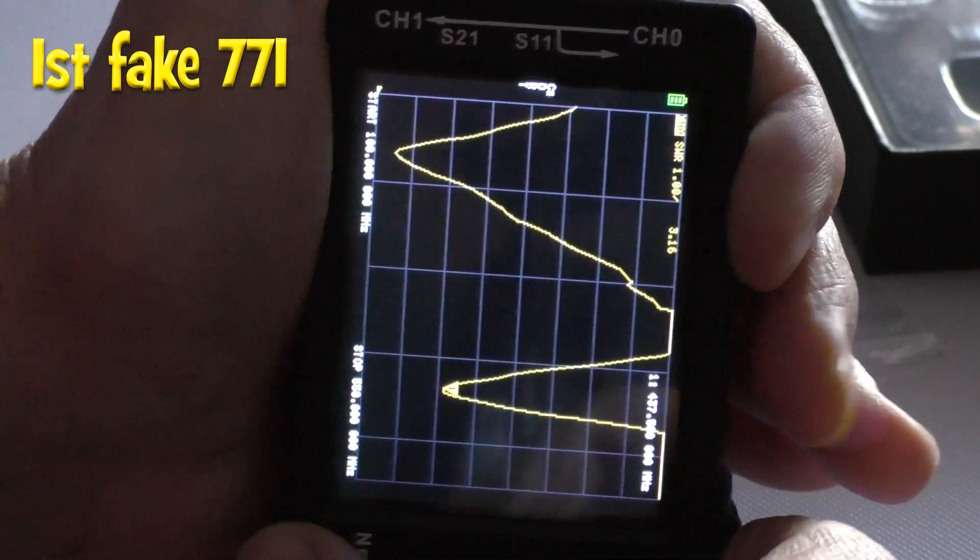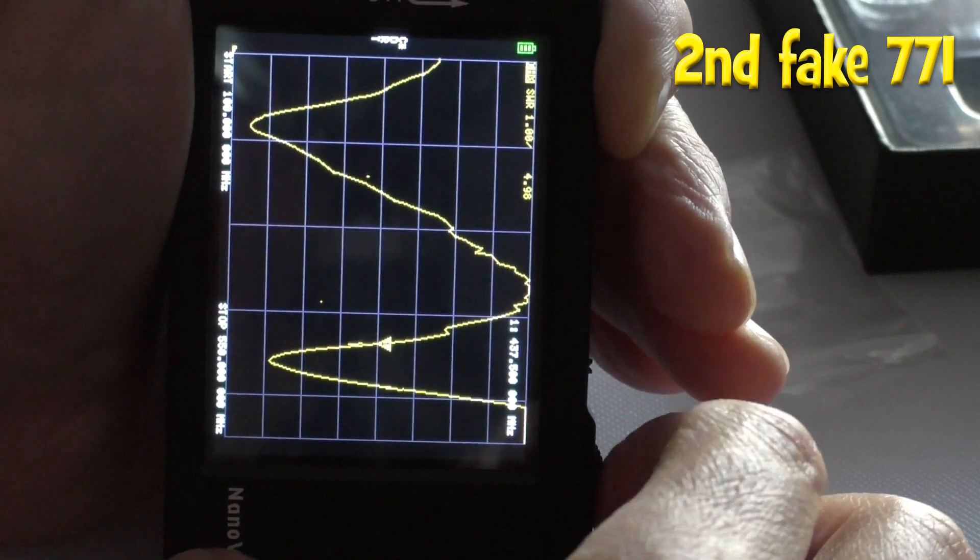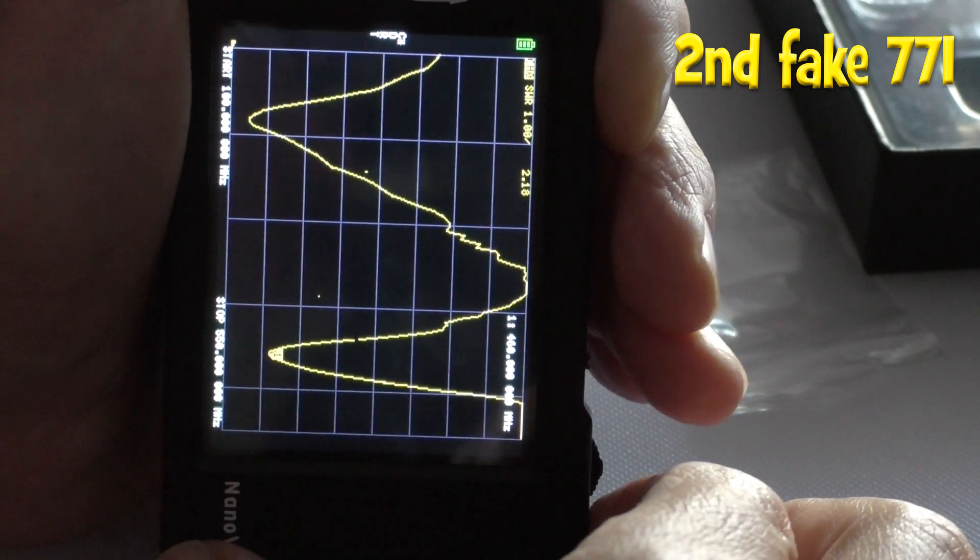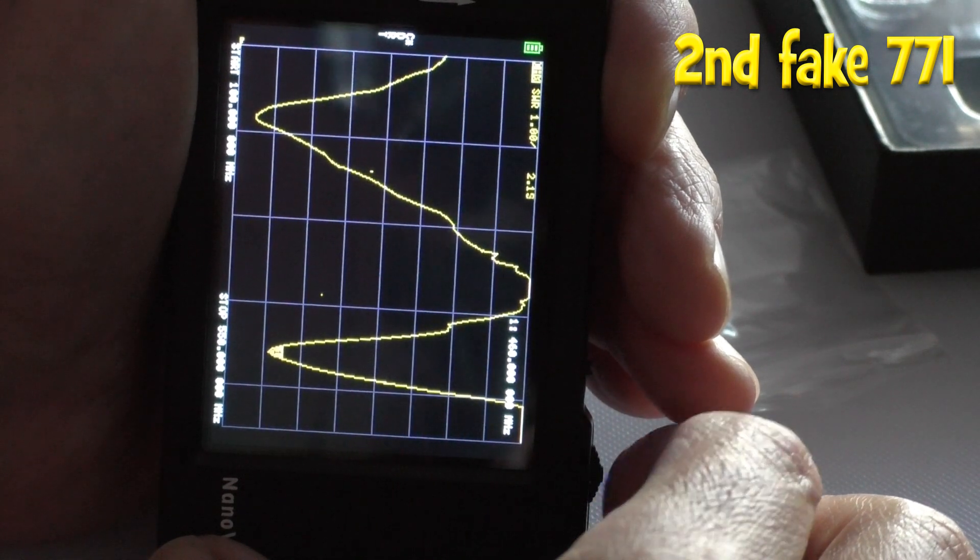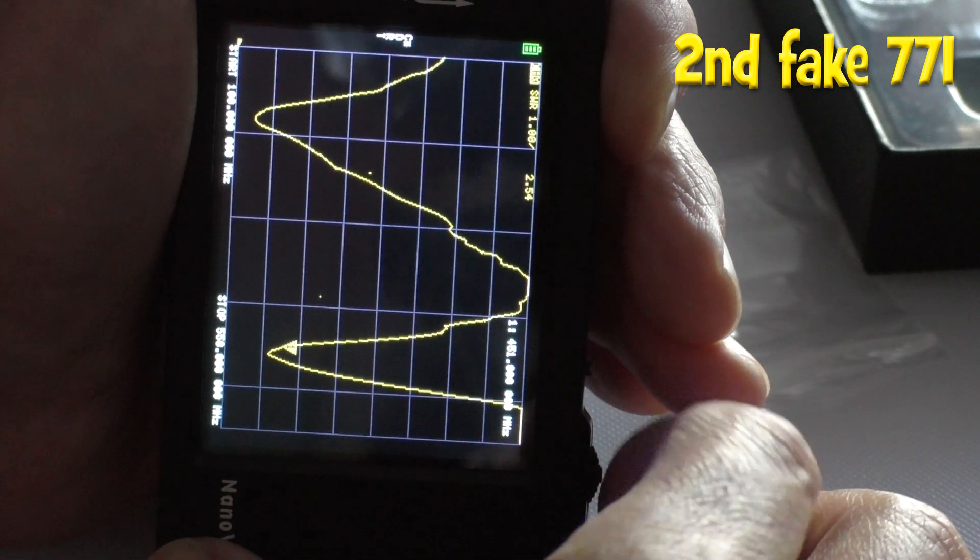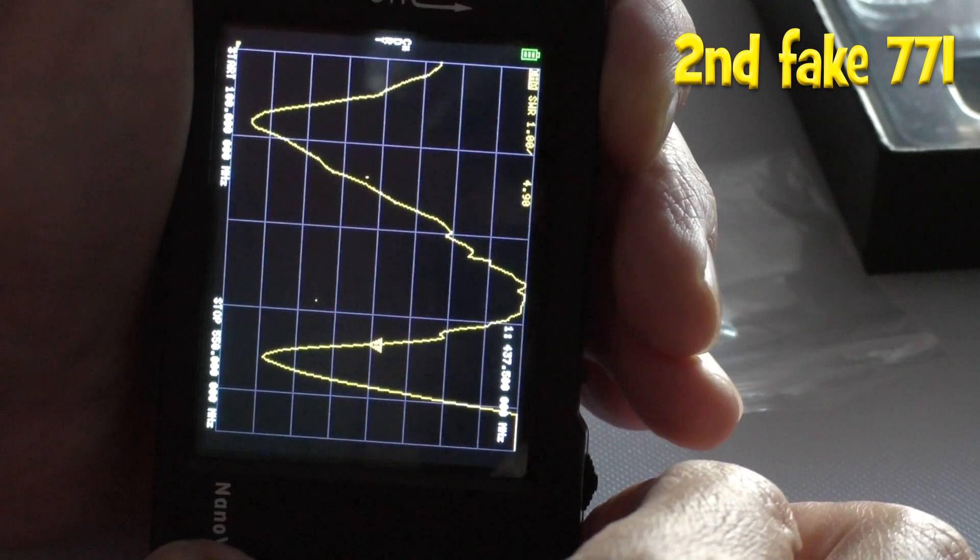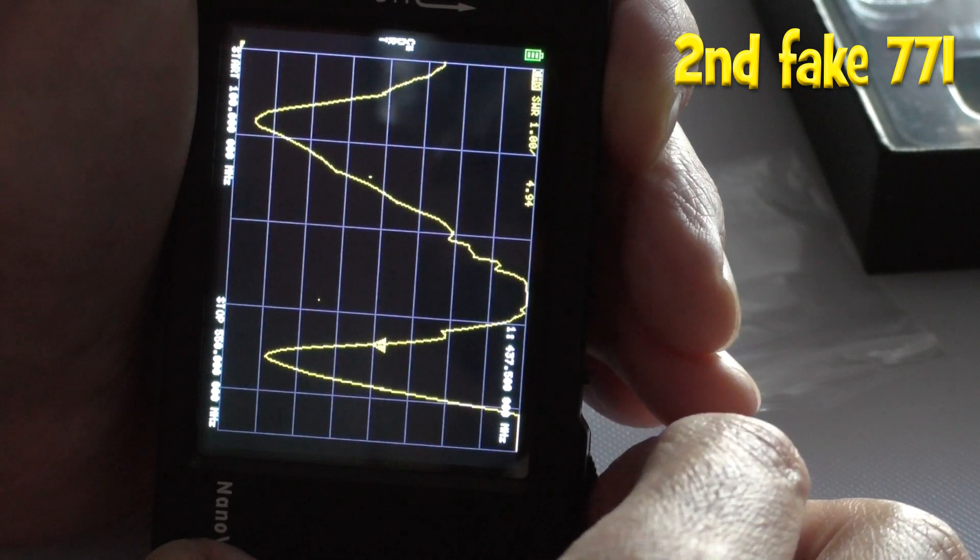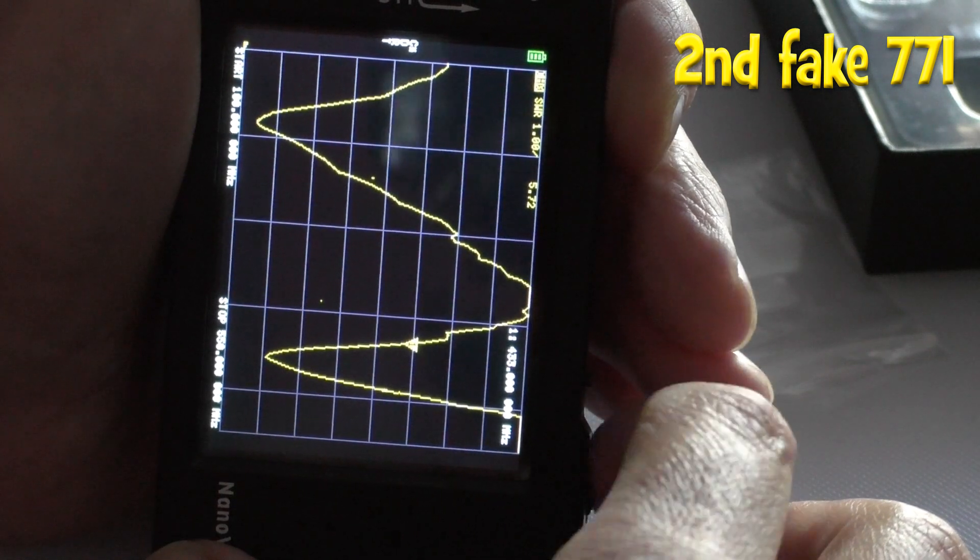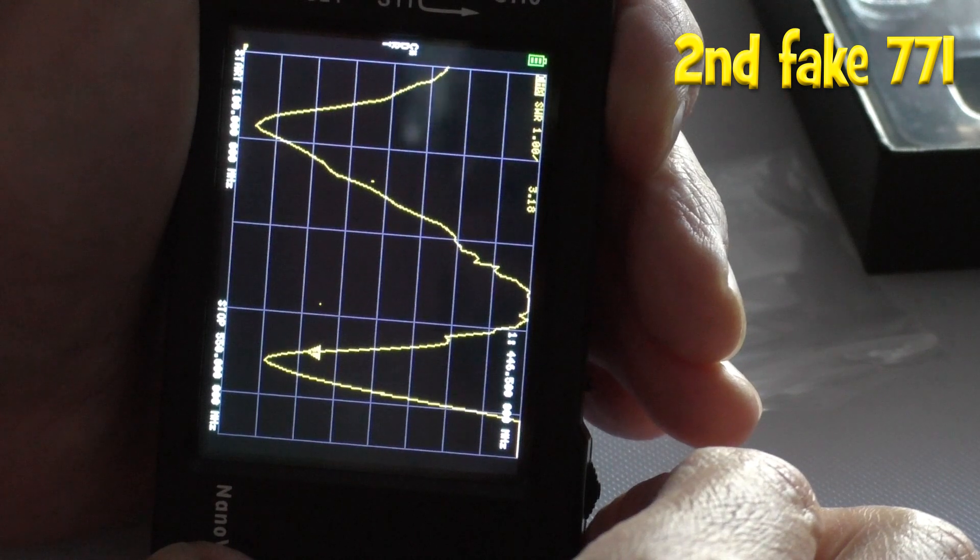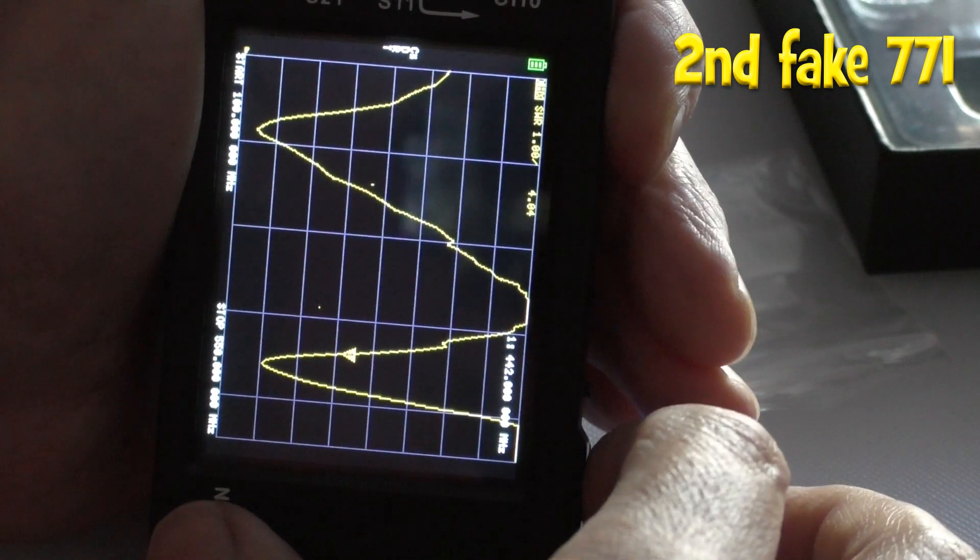I'm going to swap over now to the second fake 771 and see if that does any better. Let's do the 70 centimeter band first. At the bottom of the peak, that's coming in at 460 megahertz and SWR of 2.1, so that's completely out of tune. If I go to 437, SWR 4.9. It's almost 5 at 437 megs. If I go to 433, 5.6, 5.7. That is really bad. If I just go to 446, 3.18. It's better, but still not as good. You can see that's completely out of tune compared to the other fake antenna.